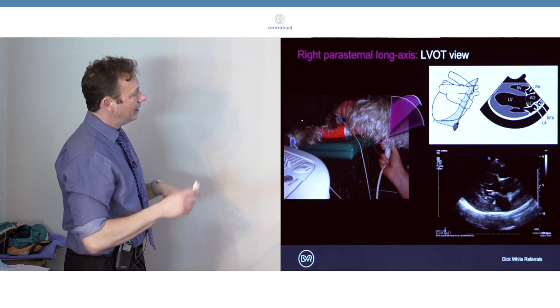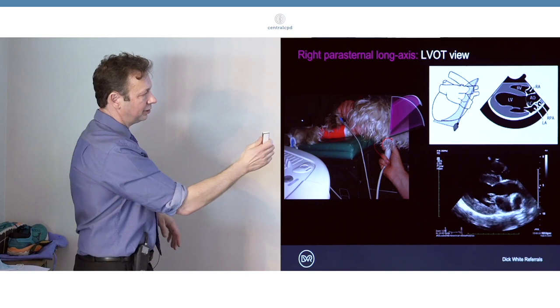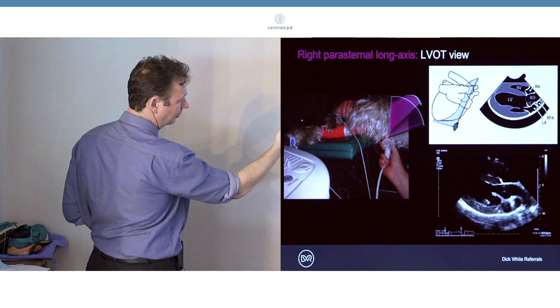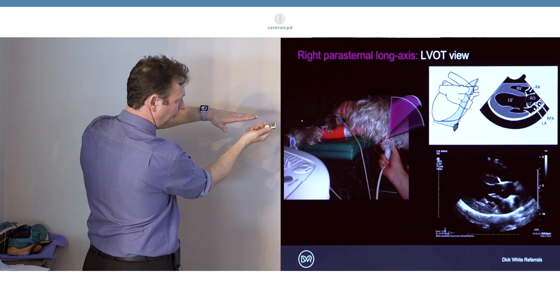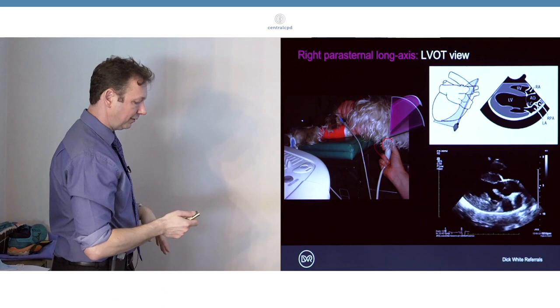If we then turn the probe a little bit clockwise - and it's not a large movement, it's usually about 30 degrees - what we also tend to need to do is to drop our hand round up towards the patient and often to slide forward a little bit.